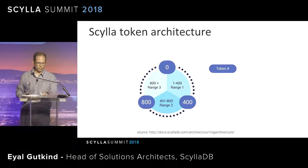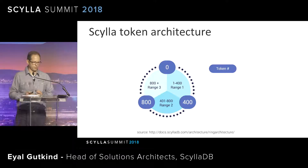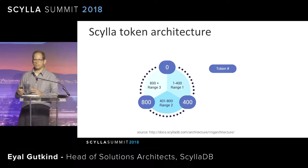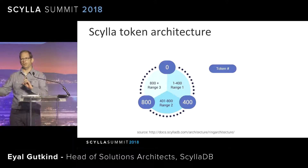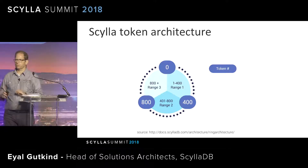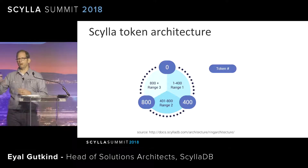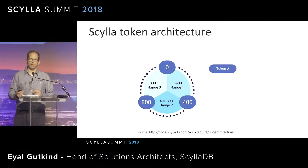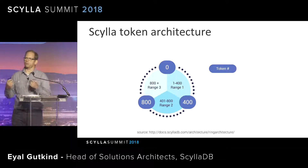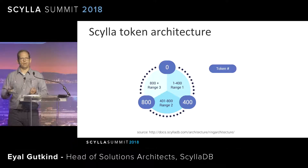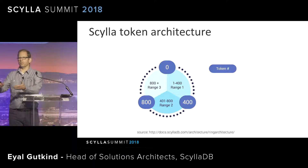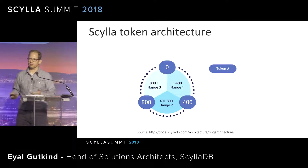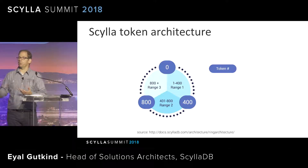If you look at a Scylla token architecture, basically we take the partitions — the actual data — and we shard it. The actual sharding happens, as you have heard before, by cores. More than that, we take the partition keys and we hash the partition key. The hashing happens in order to make sure that we distribute the data across the cluster in a very even way.